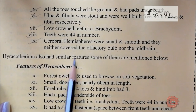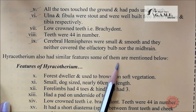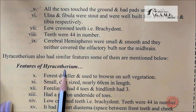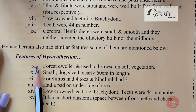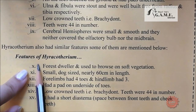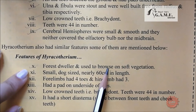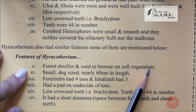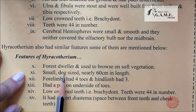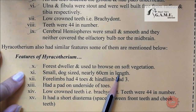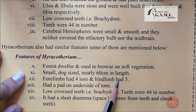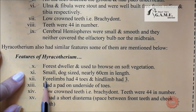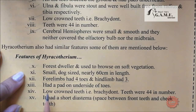Cerebral hemispheres were small and smooth, and they neither covered the olfactory bulb nor the midbrain. Heracotherium also had similar features: forest dweller that browsed on soft vegetation, small dog size — nearly 60 centimeters in length. Forelimb had four toes and hind limb had three. It had a pad on the underside of the toes.